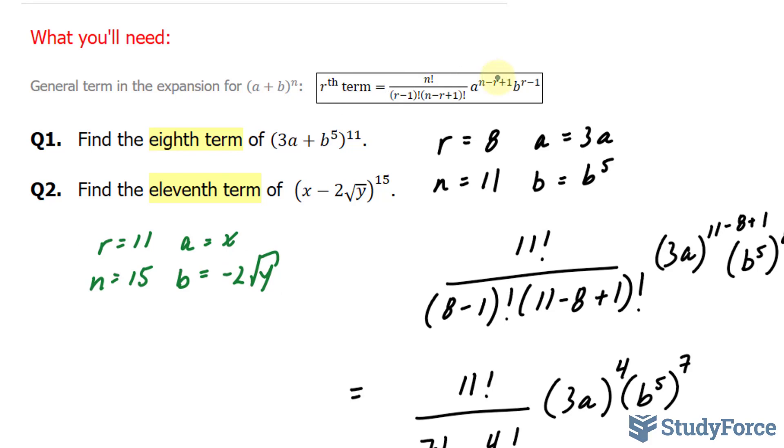Let's substitute these values into this formula once again. We have 15 factorial over 11 minus 1, which is 10. And 15 minus 11 is 4, plus 1 is 5.